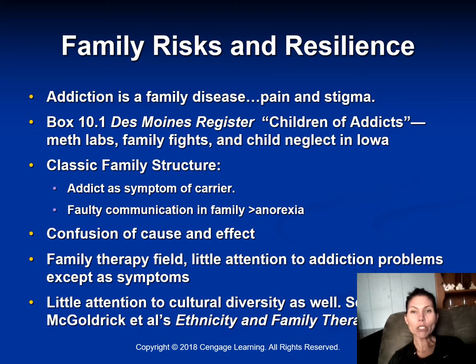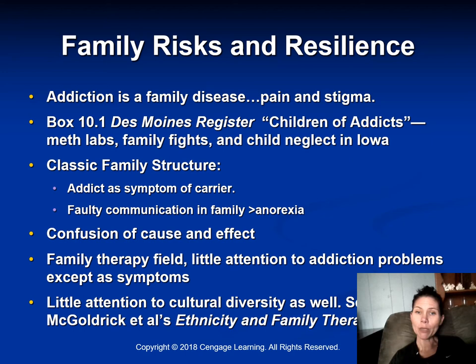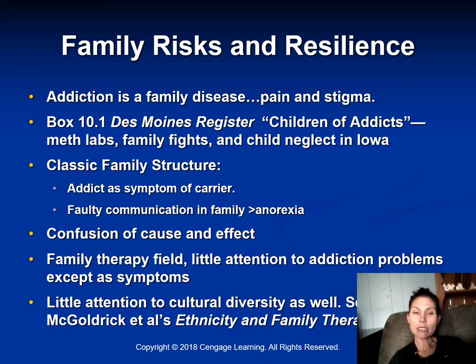When we look at addiction, we know it impacts more than just the individual — it impacts the whole family and is referred to as a family disease. In the book, section 10.1 gives a real-life example of an eight-year-old child and how a parent's addiction impacts that child. Due to the stigma of addiction, the family therapy field has had very little focus on addiction within the family. In the 1940s, the hypothesis was that it was faulty issues within the spouse — for example, a wife of an alcoholic would be referred to psychotherapy, pinning blame of the husband's alcoholism on her unconscious desire to keep him in an inebriated state.